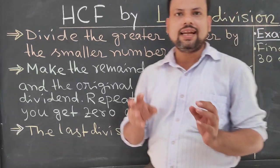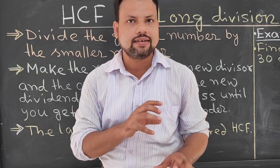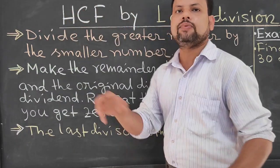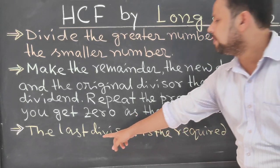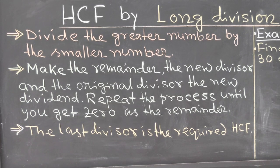Now, in the last step, after getting 0 as remainder, then last divisor will be your HCF. Look at the board proper name. Now, I will teach one example to explain this one.